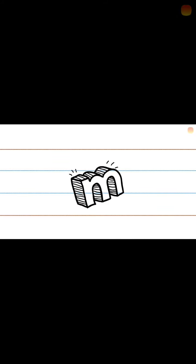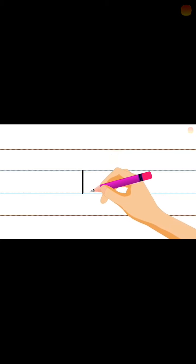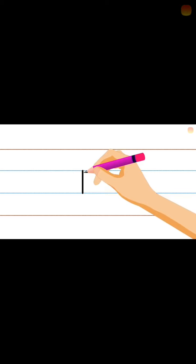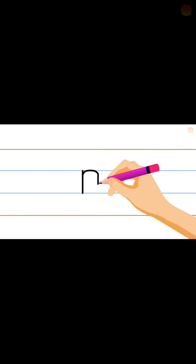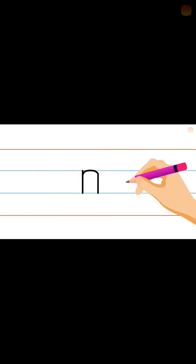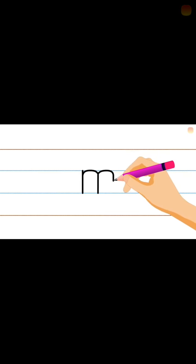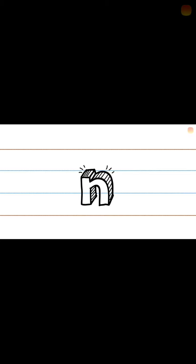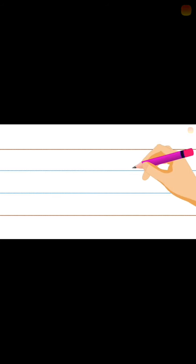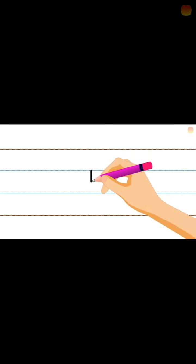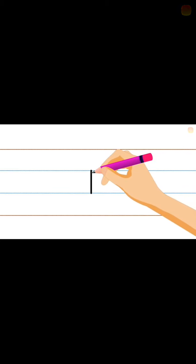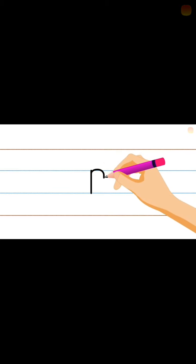Next, l after m. Small m. Start from the middle standing line, curve reaching the bottom. Again, curve reaching the bottom line. Next, m after n. How to write n? Start from the middle standing line. Go to the middle line to make the curve, reaching down line.